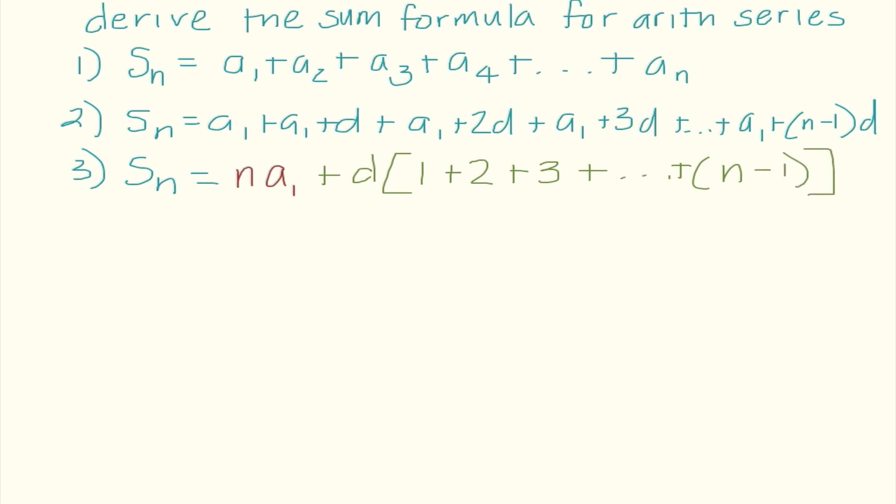So what I'm noticing there is I have a common factor of d. If I took d out, I'm left with those coefficients 1 + 2 + 3 + ... + (n-1). So to recap, I noticed I had an a_1 in each term, so that's where n times a_1 comes from. And at this point in time, this leads us to recall Gauss's formula.